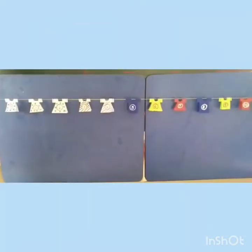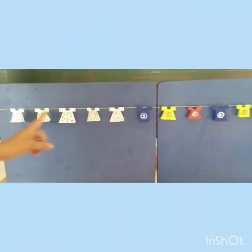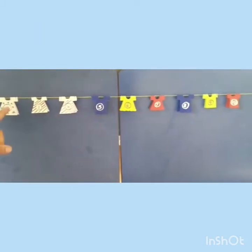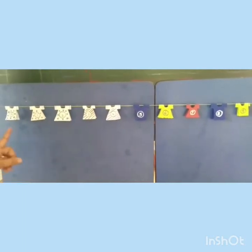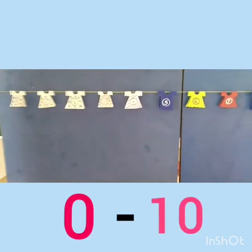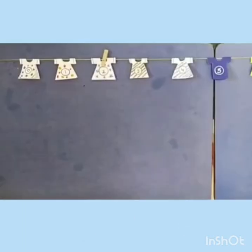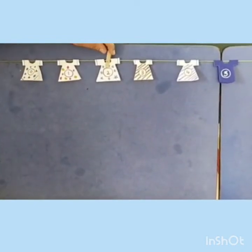Now, it's time for fun activity. See, children. This is clothesline. And here some clothes are hanging. And on that, numbers are written from zero to ten. See, children. This is a bag.